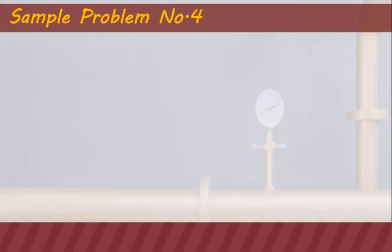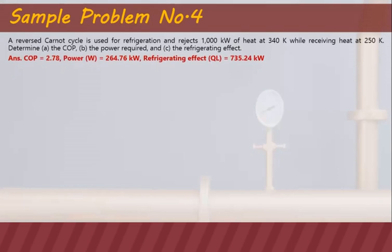Sample problem number four. A reverse Carnot cycle is used for refrigeration and rejects 1,000 kilowatts of heat at 340 Kelvin while receiving heat at 250 Kelvin. Determine the coefficient of performance (COP), the power required, and the refrigerating effect.